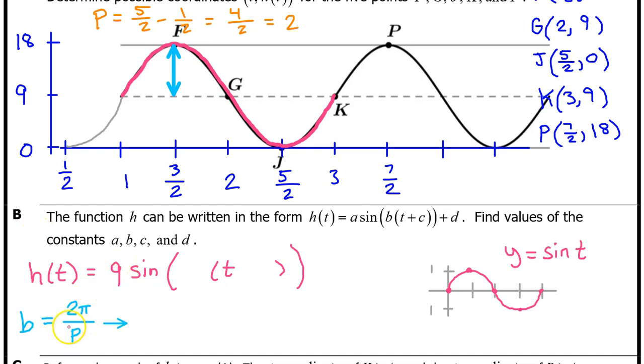I want you to memorize this formula for the b value. For sinusoidal functions, the b value is 2 pi divided by the period. So, in this case, the b value will be 2 pi divided by 2. That was the period. Which means that the b value is pi.